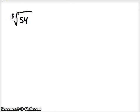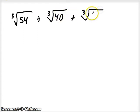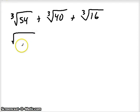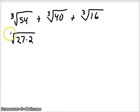Let's do one more example with more than one term. Say I have the cube root of 54 plus the cube root of 40 plus the cube root of 16. We already have the same index, so we simplify to get the same radicand. For 54: the next perfect cube that's a factor is 27 (3 cubed). 27 times 2 equals 54, so the cube root of 27 comes out as 3, leaving the cube root of 2.